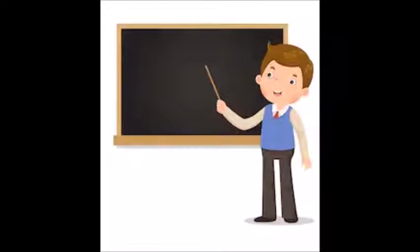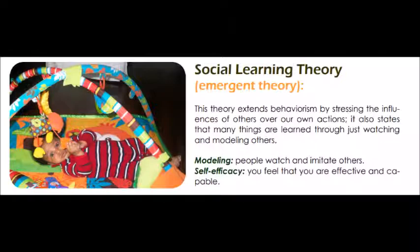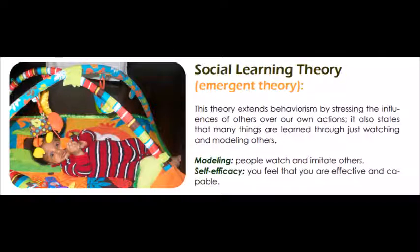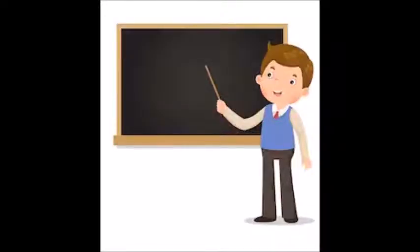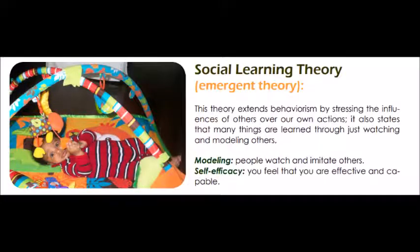Now let's look at emergent theories — theories that combine information from different academic fields. Social learning theory is an emergent theory. It extends behaviorism by stressing the influences of others over our own actions and states that many things are learned through watching and modeling others. The two academic disciplines it combines are modeling and self-efficacy, where self-efficacy is a construct related to organizational behavior.